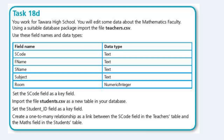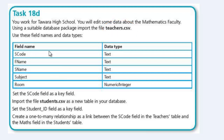In this video we're going to be looking at task 18D. From the question, we need to import teachers.csv and then be able to set the fields as stated in the table — the field names and data types. So the first thing we want to do is import teachers.csv and then start making changes to the field names and data types.